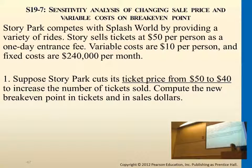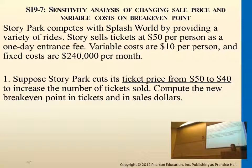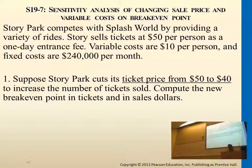First we want the QTP, which is called the contribution argument, in which this is going from 50 to 40. You have to do 20 minus 10, which equals 30. And then after that, you take the fixed cost, which is 240,000, and divide it by 30, and you should get 8,000.